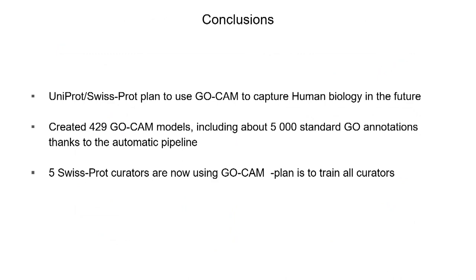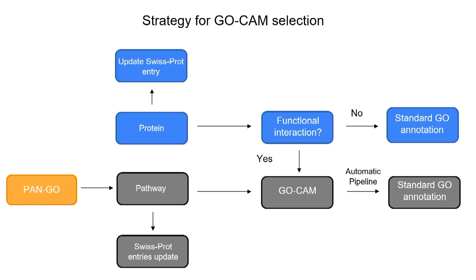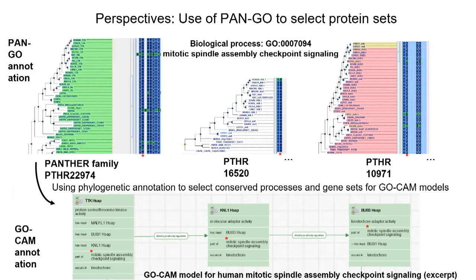In conclusion, at SwissProt we plan to use GoCam to capture human biology in a systematic way. So far, we have created about 429 models, and these models led to the creation of about 5,000 new standard GO annotations. Currently, five SwissProt curators are using GoCam, and the plan is to train all curators to do GoCams. For pathway curation, we are now also experimenting with using PanGo to select sets of proteins for GoCam creation.